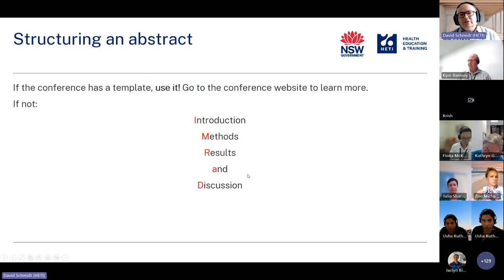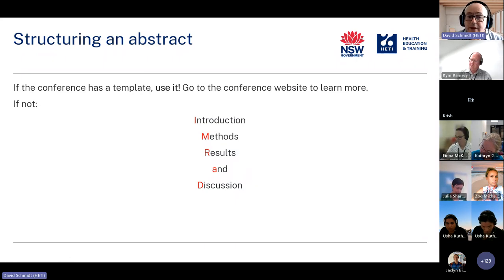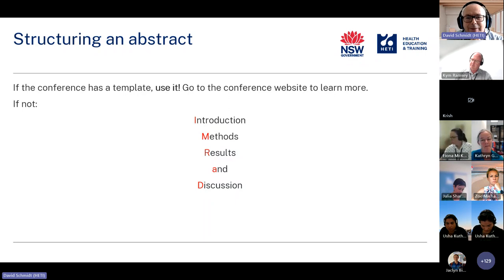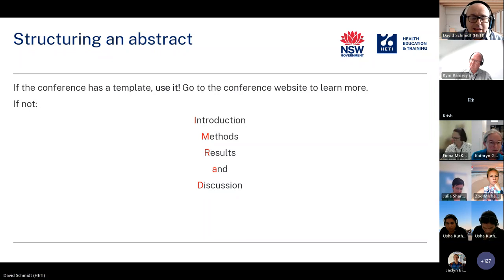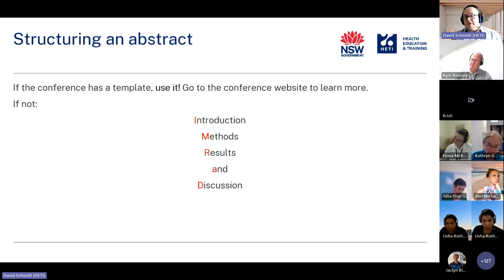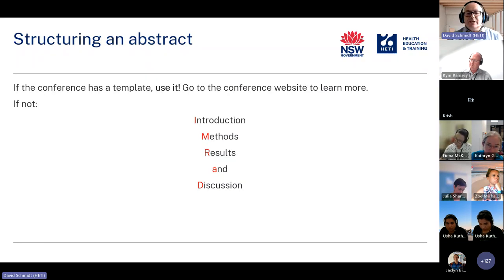In terms of structuring an abstract, a lot of conferences these days have a template on their website — if they provide a template, use it. If you don't use their template, you're less likely to get accepted. If they haven't given you a template, my advice is to use the IMRAD format: Introduction, Methods, Results and Discussion. This will look really familiar because it's the kind of thing we generally see in articles.